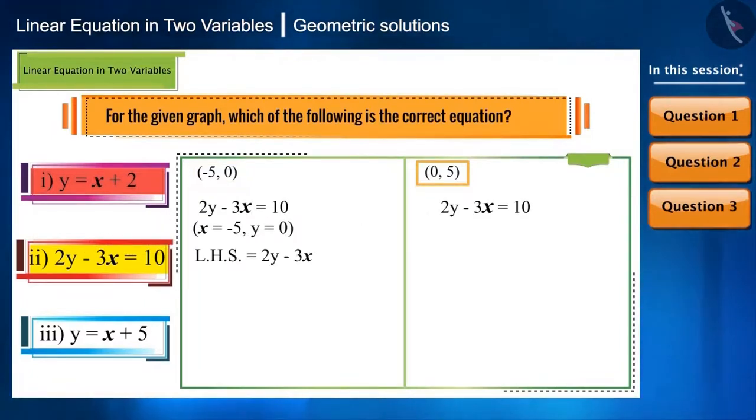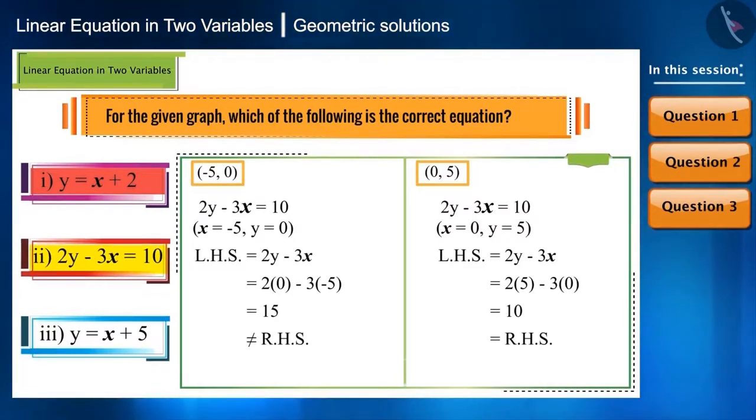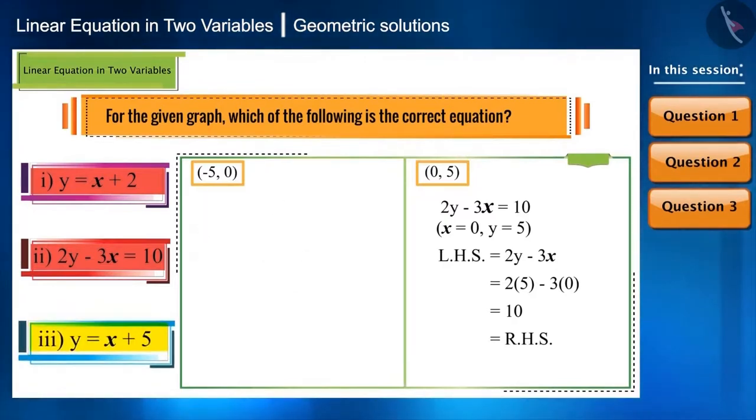When x and y are replaced by minus phi comma 0 coordinates, but replacing the coordinates x and y with 0 comma phi is making the LHS equal to RHS. So is this the equation of this line? No. Only when both the coordinates satisfy the equation, we can call it the equation of the line.